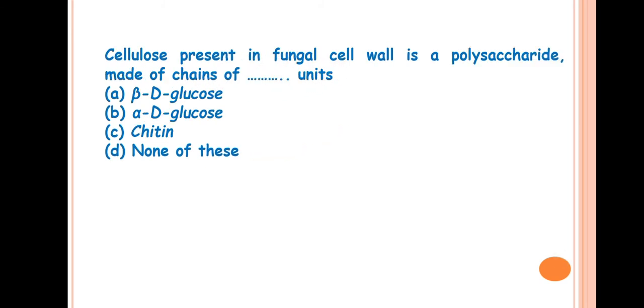Next question is, cellulose present in fungal cell wall is a polysaccharide made of chains of dash units. The answer is beta-D glucose. The basic unit of cellulose is beta-D glucose and these units are linked by 1,4-beta-glycosidic bond.